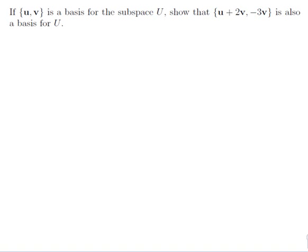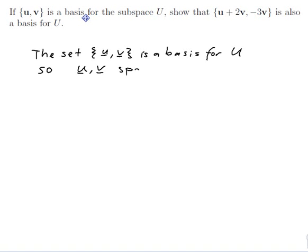First let me understand the problem. What does it mean for this set to be a basis for U? The definition says the set {u, v} is a basis for U, so u and v span U and u and v are linearly independent.